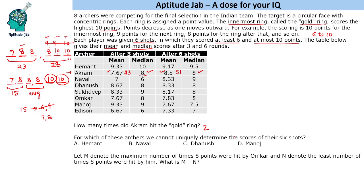For which of these archers can we not uniquely determine the scores of their six shots? We will go option by option. Let's look at Hemant. He looks like an outlier with a very high median score. A median score of 9.5 means the average of the two middle scores is 9.5, which is only possible if he has 9 and 10. And since we arrange in ascending order, the two highest scores are definitely 10 and 10. His overall mean is 9.17, meaning he scored 55 points total. In the first three games he scored 28.